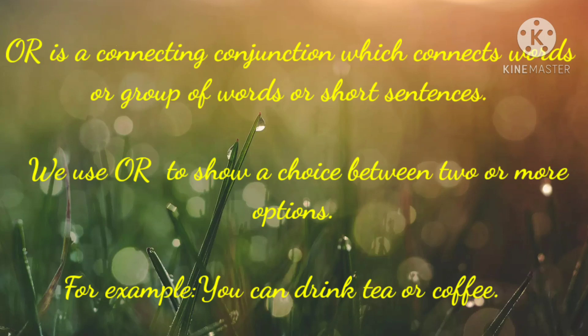So kids, let us learn to use these different conjunctions in sentences. 'Or' is a connecting conjunction which connects words or group of words or short sentences. We use 'or' to show a choice between two or more options. For example, you can drink tea or coffee. As you can see, children, two options are given and we have to choose among both the options.